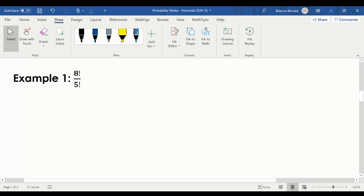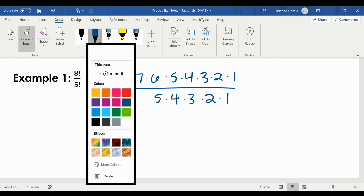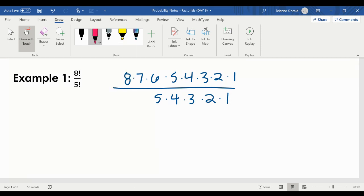So for this first example, I have 8 factorial over 5 factorial. I'm going to expand these. 8 times 7. Expand is another way of saying, just write them out.